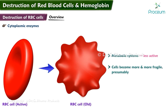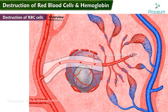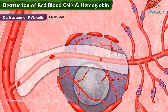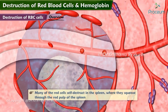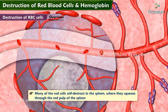The metabolic systems of old red cells become progressively less active and the cells become more and more fragile, presumably because their life processes wear out. Once the red cell membrane becomes fragile, the cell ruptures during passage through some tight spot of the circulation.